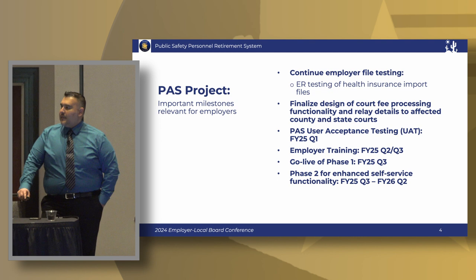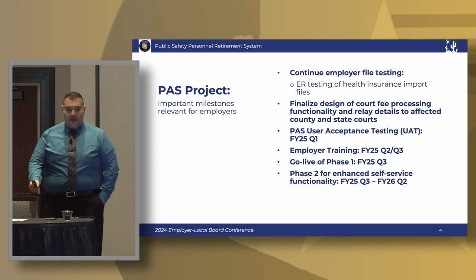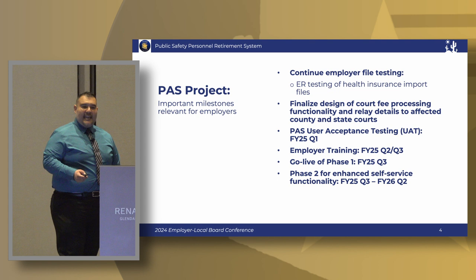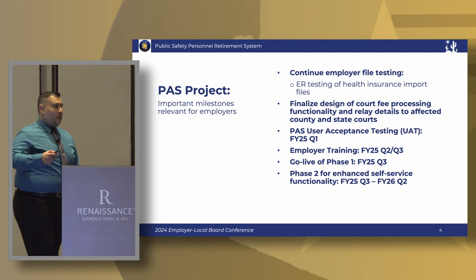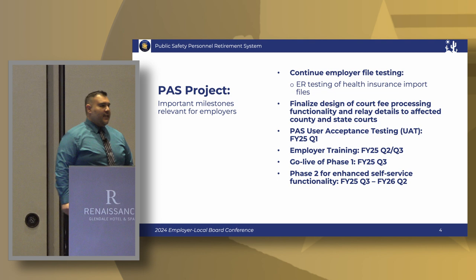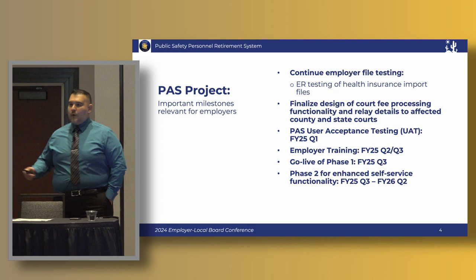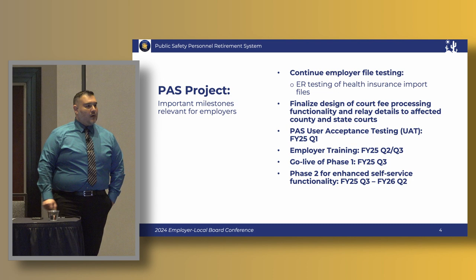That's the October, November, December timeframe in which we plan to begin kicking off employer training so that they're prepped and ready for go live within our new system. Our phase one go live is in the third quarter of fiscal 25, at which point we kick off the design and configuration of phase two — what we call rollout two — slated to go live later in 25. That second phase is really around enhancement of member self-service and employer self-service, such as members being able to apply for retirement or refunds automatically through the portals.